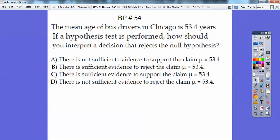All right, so this ringing a bell, it's been a couple of months since I had you in class. The mean age of a bus driver in Chicago is 53.4 years. If a hypothesis test is performed, how should you interpret a decision that rejects the null hypotheses? So if it rejects the null hypotheses, our results should be, it's this one right here. There is sufficient evidence to reject the claim that it's equal to 53.4. So you'll do some calculations, and it'll give you sufficient evidence, or significant evidence, we call it, to reject our claim that your mu is equal to that.